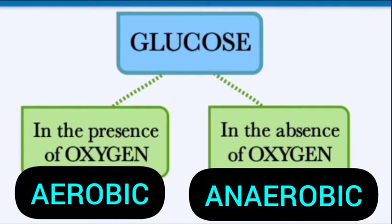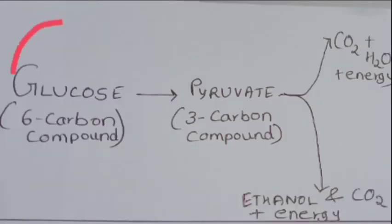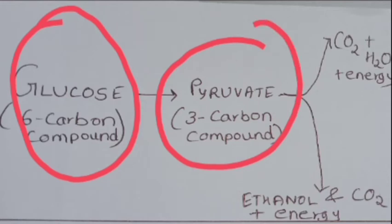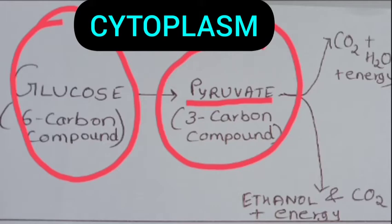We are not talking only about human respiration — we are looking at how glucose can be broken down generally. Glucose is a six-carbon compound. The first step of breaking down glucose is to convert it into pyruvate, which is a three-carbon compound. This happens in all organisms and occurs in the cytoplasm. This first step is the same in all cases.